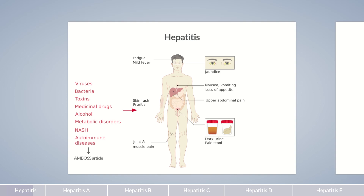Impaired coagulation factor synthesis in the liver leads to more frequent bleeding. In the long term, chronic hepatitis can lead to cirrhosis or even hepatocellular carcinoma. So viral hepatitis should be taken seriously not only because of the risk of infection, but also because of the potential long-term effects.